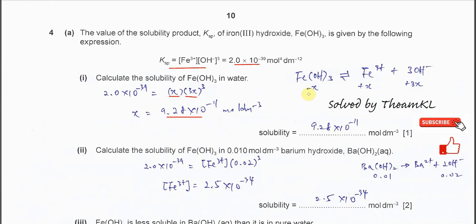Because when x moles of iron 3 hydroxide dissociate, it forms x moles of iron 3 ions — the amount is the same in the given volume. So therefore we can use x as the solubility.